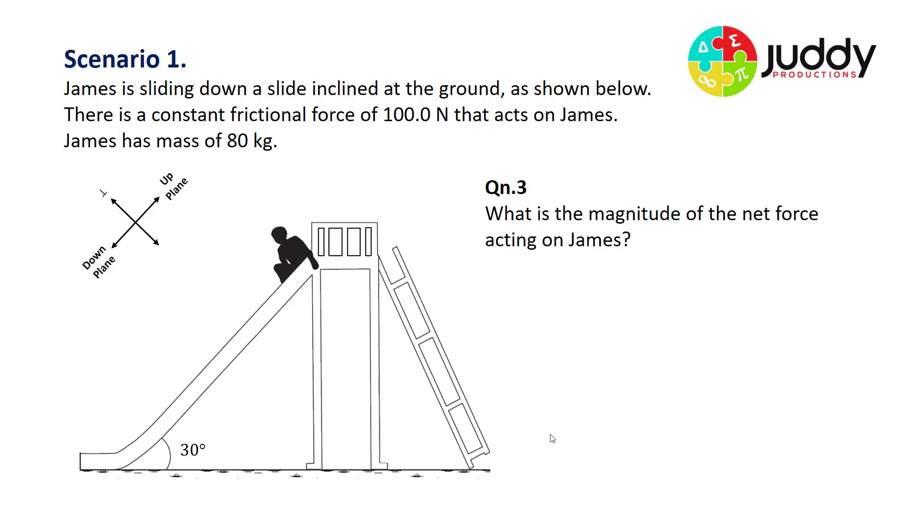Question three: what is the magnitude of the net force acting on James? Here's our equation: net force equals mg sin theta take the force due to friction. When looking at the net force, we're looking at forces acting down the plane. The net force is the direction which James will accelerate on the slide, which is down the plane.